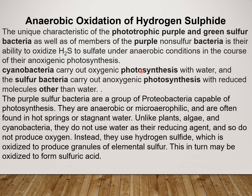To summarize the anaerobic oxidation of Hydrogen Sulphide carried out by purple Sulphur bacteria: these bacteria are capable of photosynthesis, but the key difference is that they do not use water as a reducing agent — instead they use H2S. During photosynthesis, this Hydrogen Sulphide gets oxidized and produces granules of elemental Sulphur, which again undergoes oxidation resulting in the production of Sulphuric acid.